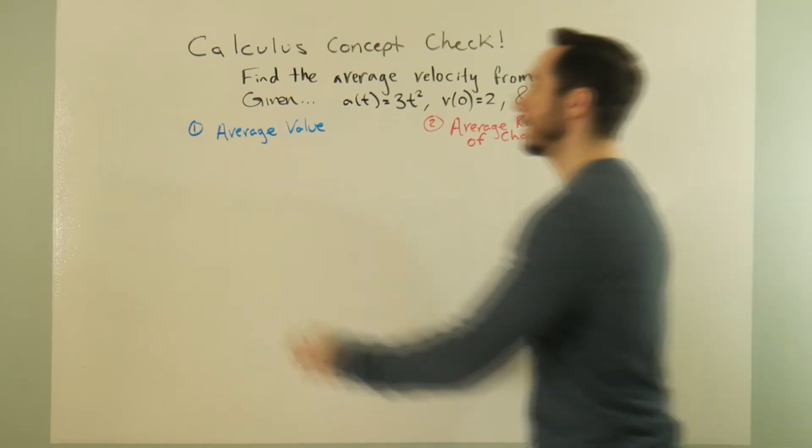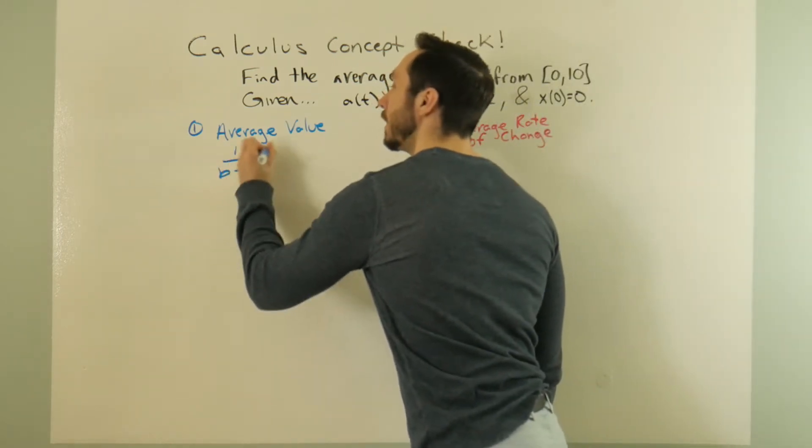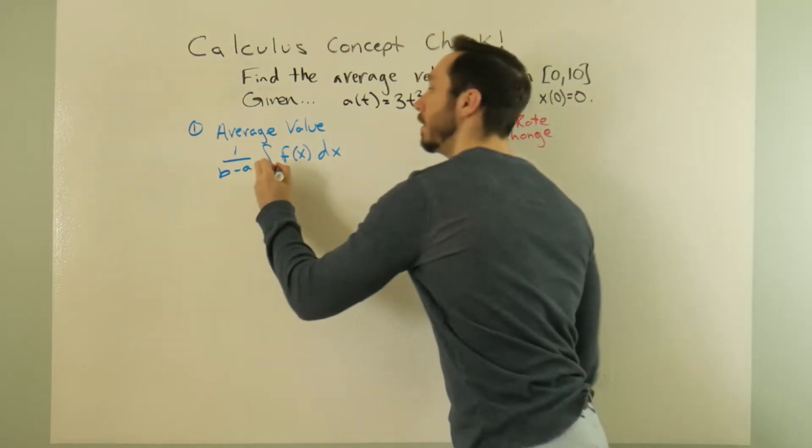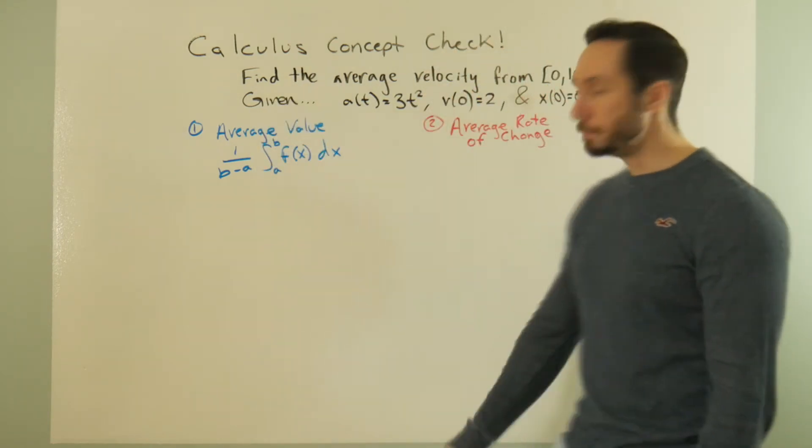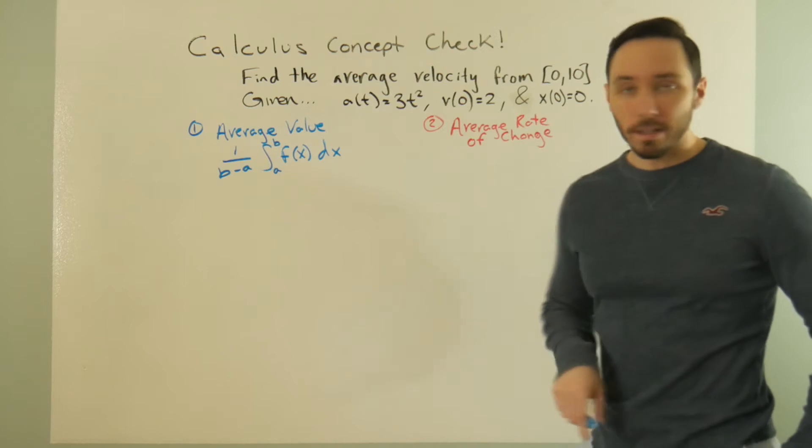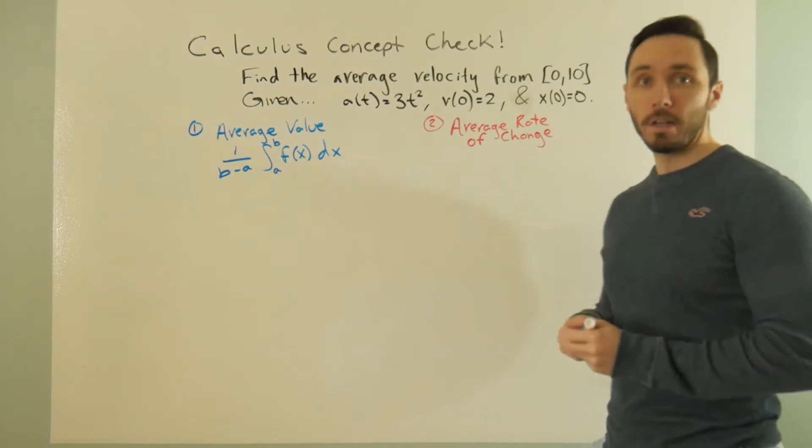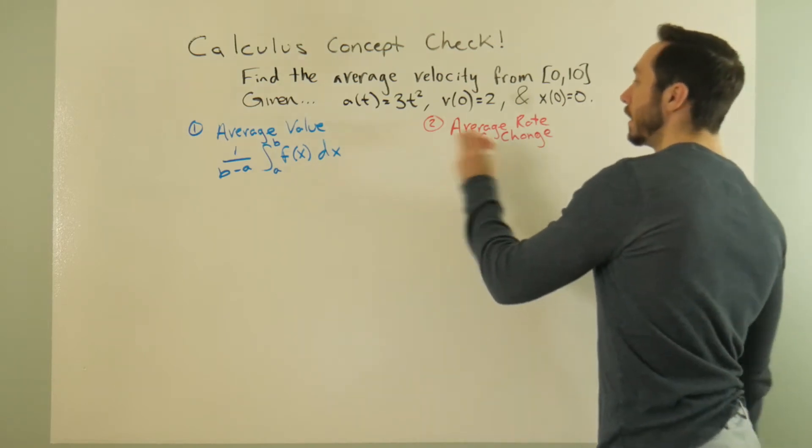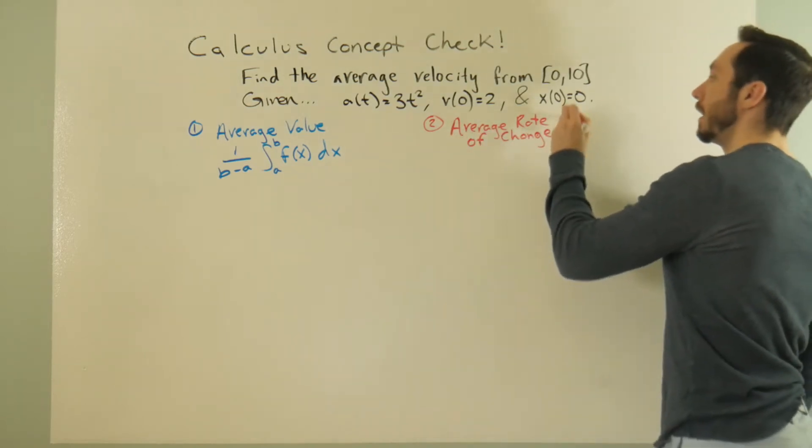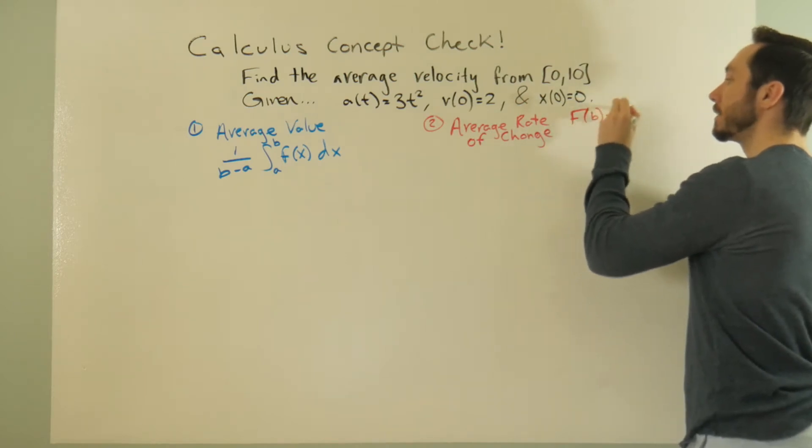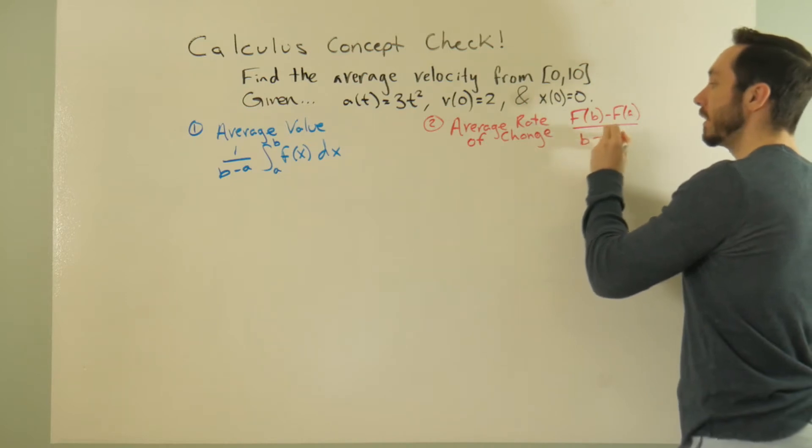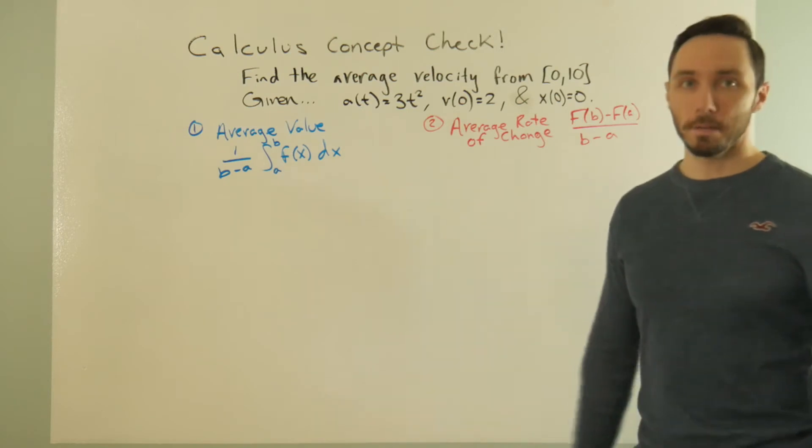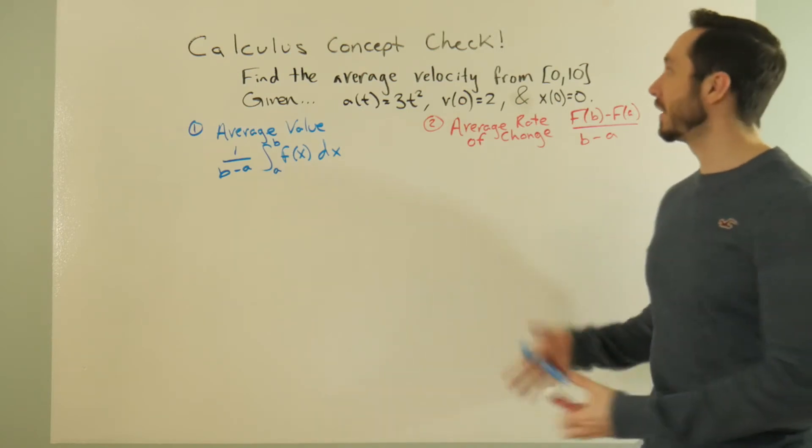So, average value looks a little like this. It's 1 over b minus a of the integral of f of x dx. This will get you the average value from a to b of your function. And then average rate of change gives you an average rate of your function. Keep in mind we may be playing with different derivatives here or different functions. For average rate of change, that would be f of b minus f of a all over b minus a. This is just slope formula. Actually, it's not even calculus, but it's a good component to calculus when it's on this setting.